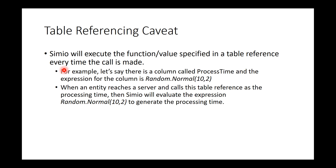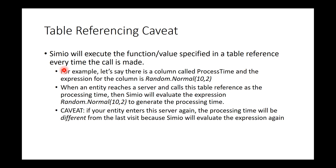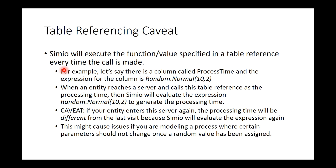So it enters that server, processes for some amount of time, it generates it randomly, and everything's fine. The caveat though is: let's say you want the model entity to process for the same time — say the random normal resulted in eight minutes. If this entity comes back to the server again and you want it to run eight minutes again, it won't happen. That won't work if you're trying to reference the table again, because when you reach the server and reference the table again, Simeon will generate a new value using the random.normal expression. So the first visit might be eight minutes, the next visit for the same model entity might be seven minutes — it's going to be something completely different. It'll evaluate the expression again.